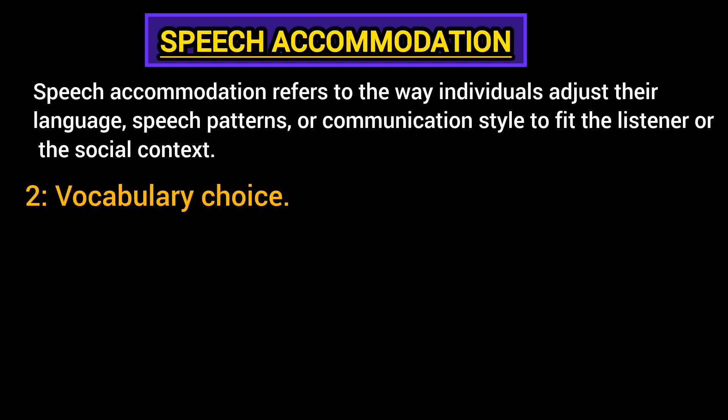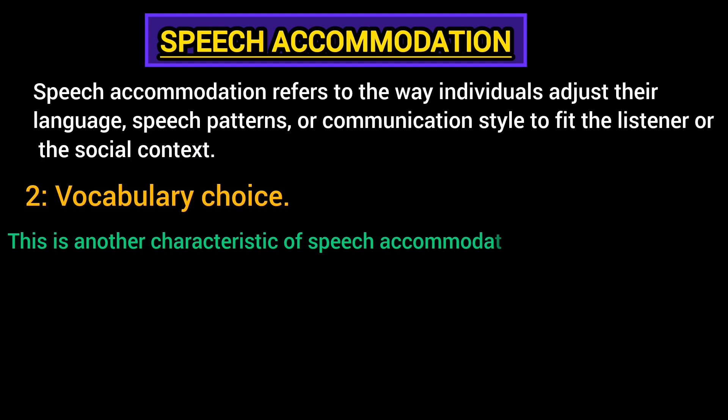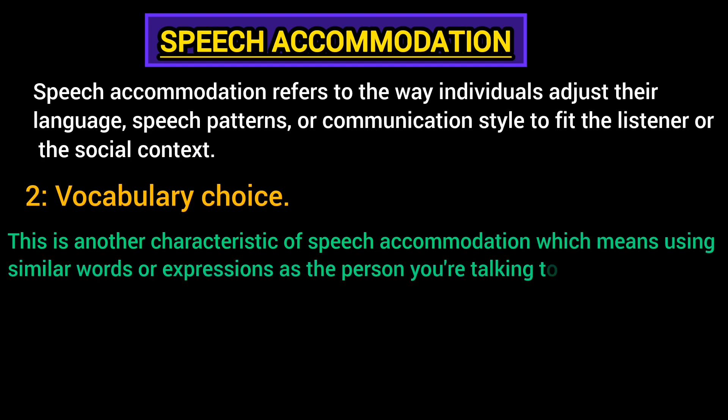Vocabulary choice is another characteristic of speech accommodation, which means using similar words or expressions as the person you're talking to. Imagine talking to a friend who loves a particular slang — you might start using those words too. Or if you're talking to a little kid, you might use simpler words. According to the listener, we modify or change our vocabulary. It is a universally accepted phenomenon that we don't use the same vocabulary for every person.